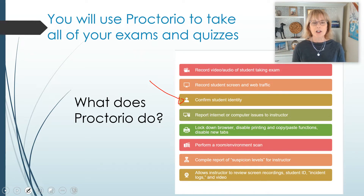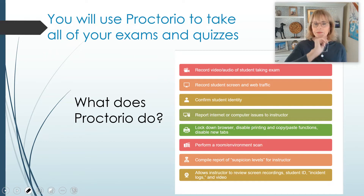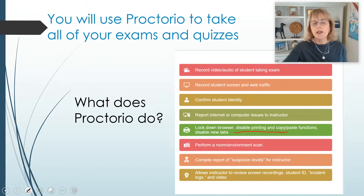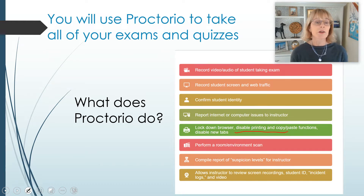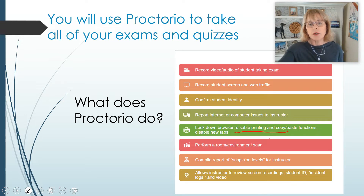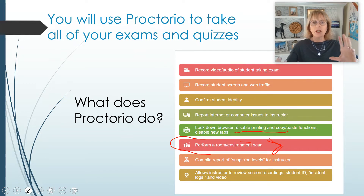Those are the three acceptable forms of ID to use with Proctorio. This system will also make it so that when you are taking the exam, you cannot access any other websites. You can't be doing anything else like going to Google for answers while you're taking the exam. It is always going to start with doing a room scan.